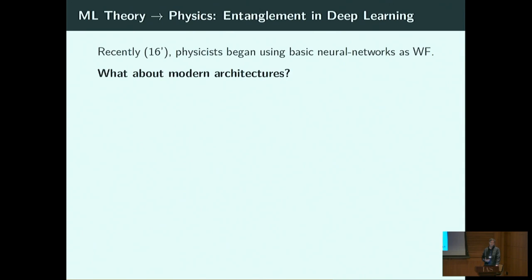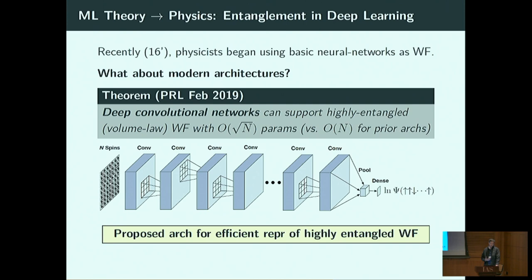Just as we studied the expressiveness of neural networks, physicists study how well tensor networks can represent systems of a given quantum entanglement, and quantum entanglement is also related to tensor rank. So we have a connection between these two worlds. Our first instinct was to take results that physicists developed and derive new machine learning results — which we did, including the RNN result I mentioned.